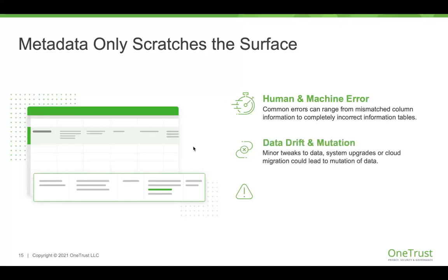We also see data drift and mutation — sometimes during cloud migrations, copies of production are saved down to development environments so R&D teams can test changes before pushing to production. But those copies made for a short period and limited purpose never actually get removed. We've found Social Security numbers in copies that were dumped into S3 buckets, completely uncovered only by doing this deeper discovery. S3 buckets tend to be the kitchen junk drawer of an organization — people just throw anything into them — and it's always interesting to see what you uncover when you pull everything out.